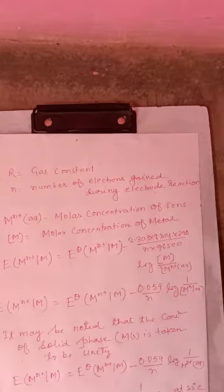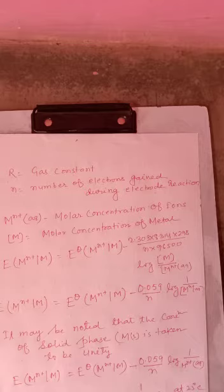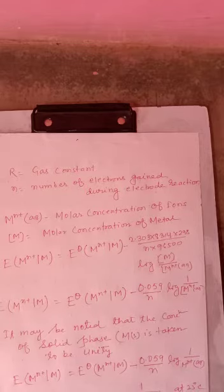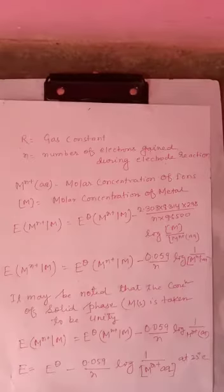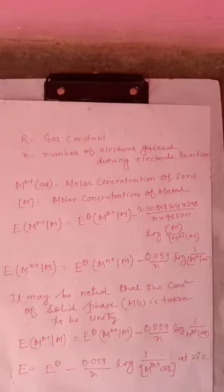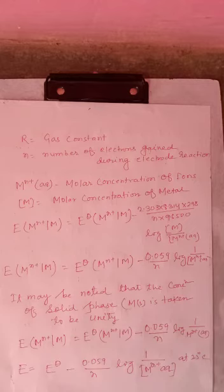R will be the gas constant. n will be the number of electrons gained during electrode reaction.